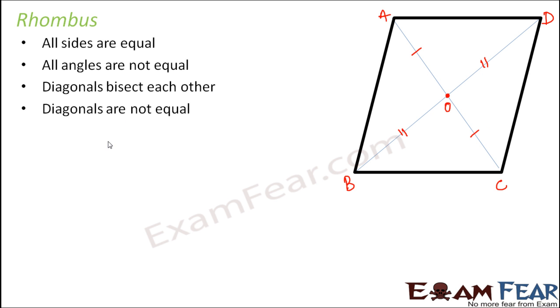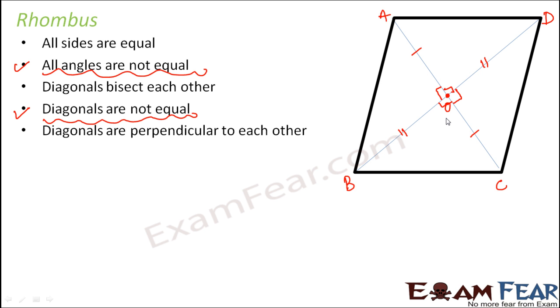Diagonals are not equal. So again that is another point of difference between rhombus and square. Here angles are also not equal. However, diagonals are perpendicular to each other. So here also these diagonals are at right angles to each other.